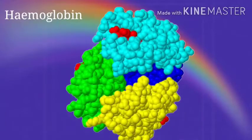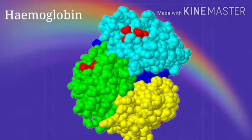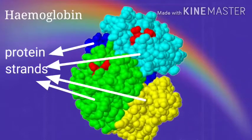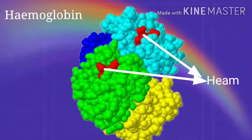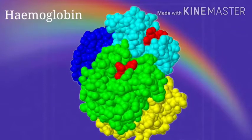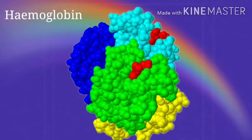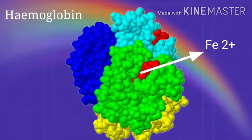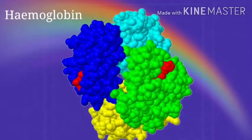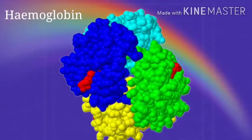Hemoglobin is an oxygen transport protein. It has four protein strands as subunits. Each subunit contains a heme prosthetic group. The heme molecules give red color to the blood. Each heme molecule contains one iron atom, and oxygen binds with this iron atom. So each hemoglobin carries four oxygen molecules.